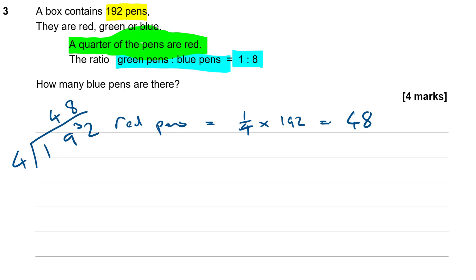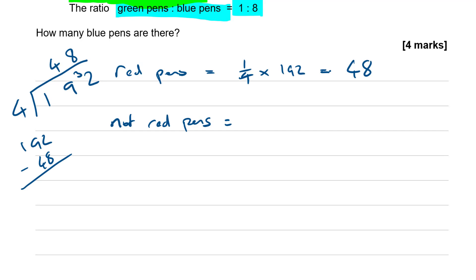So we've got 48 red pens. How many pens are not red pens? That's going to be 192 minus 48. 192 subtract 48 — 2 subtract 8: borrow 1, leaving 8 minus 4 is 4, and that's 144 not red pens. So I've got 144 pens that are not red, which means they must be green pens or blue pens. And the ratio of green to blue is 1 to 8.